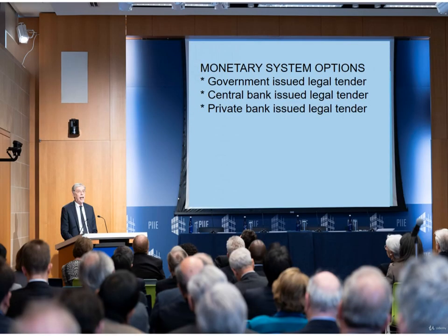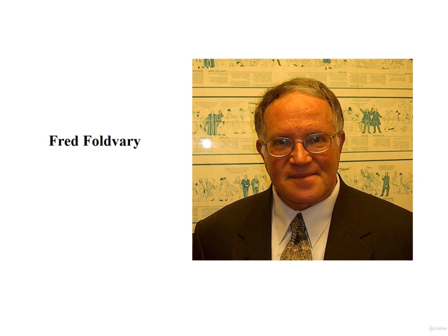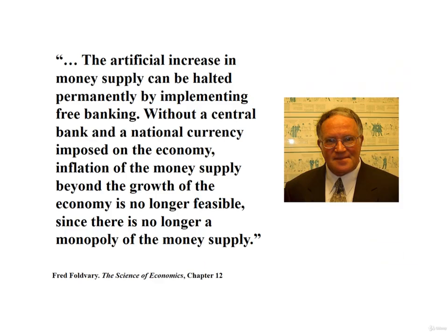A major part of the debate in nearly every country is whether the issuance of currency should be fully privatized or made the direct responsibility of government. Moreover, does the currency need to be redeemable in something specific such as coinage minted with a standard amount of gold or silver? One view held by economists such as Fred Foldvary is that free banking would work very efficiently and with little corruption. He explains: "The artificial increase in money supply can be halted permanently by implementing free banking. Without a central bank and a national currency imposed on the economy, inflation of the money supply beyond the growth of the economy is no longer feasible, since there is no longer a monopoly of the money supply."